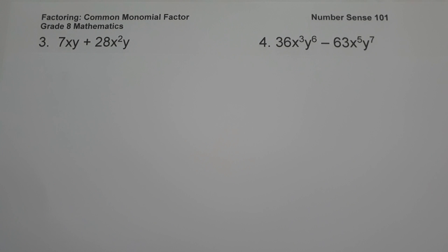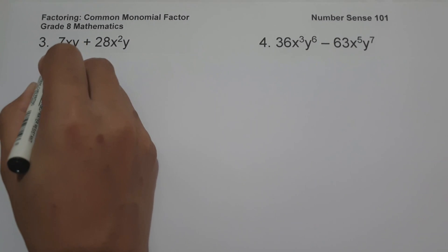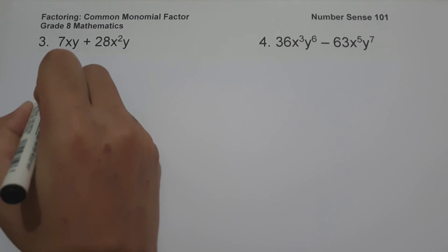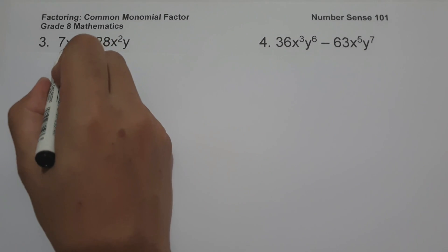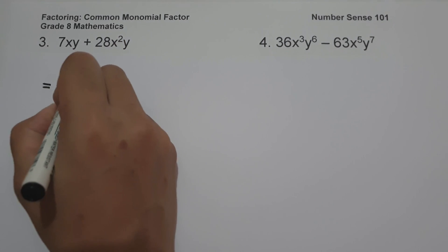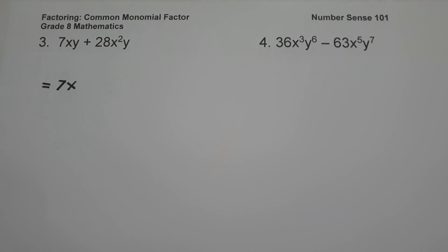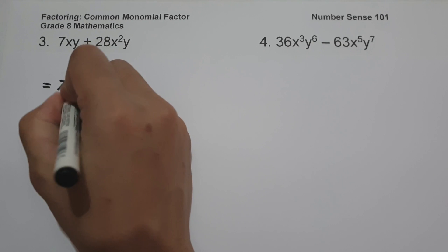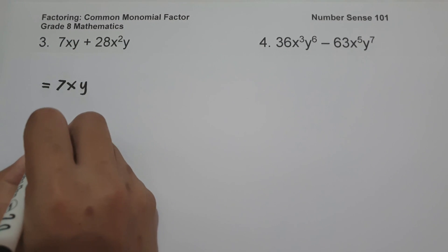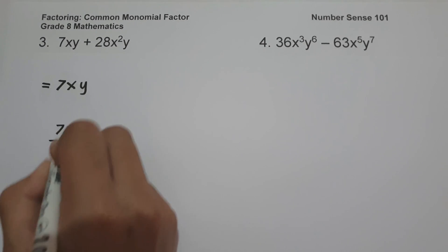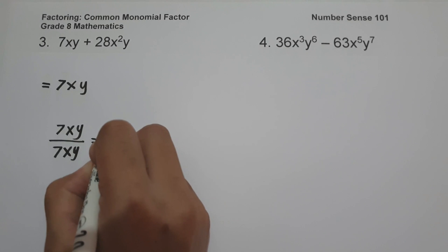Example number 3, we have 7xy plus 28x²y. The first thing that we're going to do is to find the greatest common monomial factor. The GCF of 7 and 28 is 7. Then let's find the GCF of x and x²: that is x. In finding the GCF of variables, simply choose the smaller exponent between the two. And then the GCF of variable y is y. Then let's divide: 7xy divided by 7xy is 1.